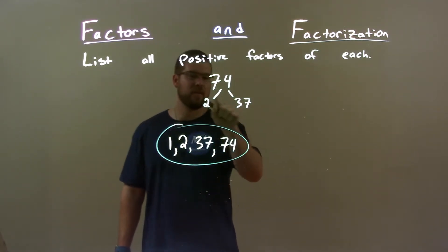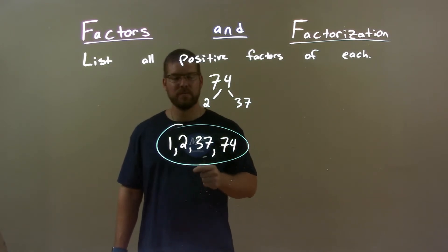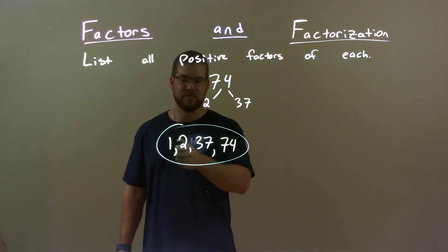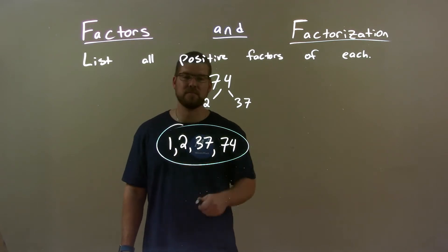And there's nothing else that we can multiply between these two that also get 74. So our final answer is just 1, 2, 37, and 74.